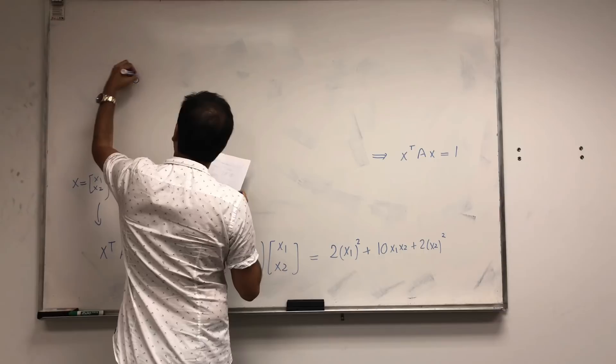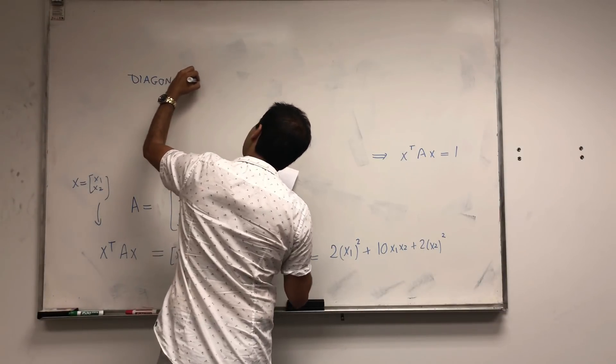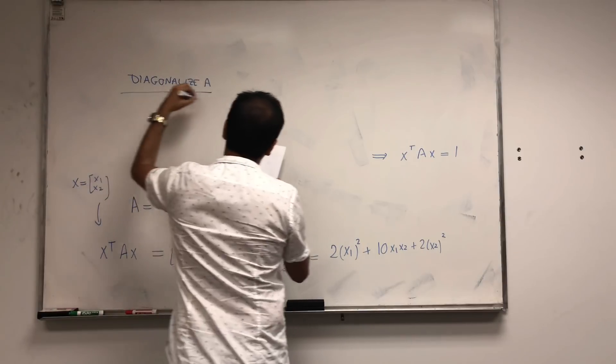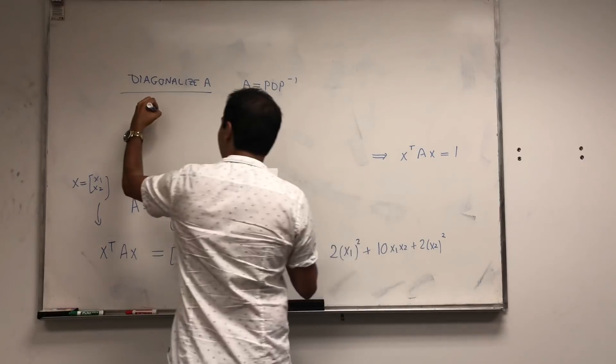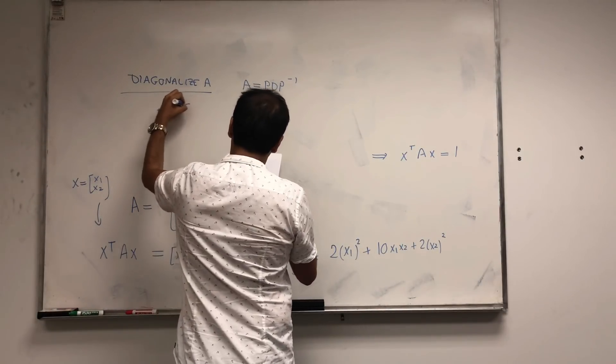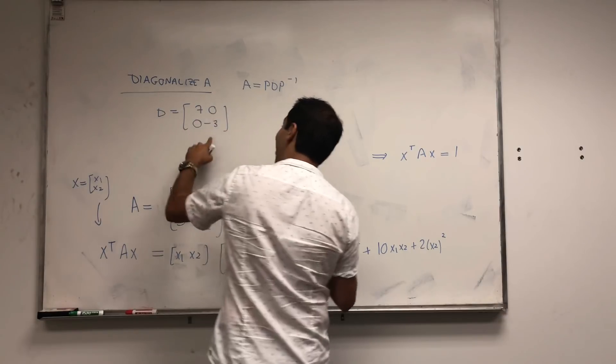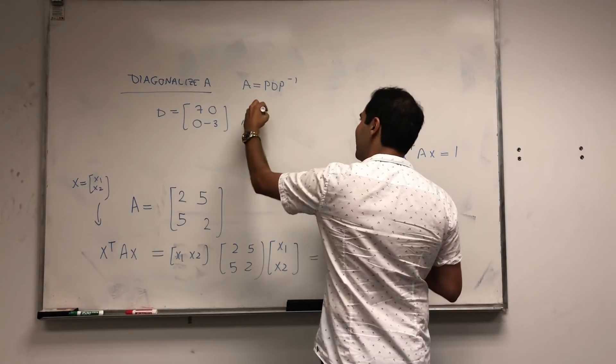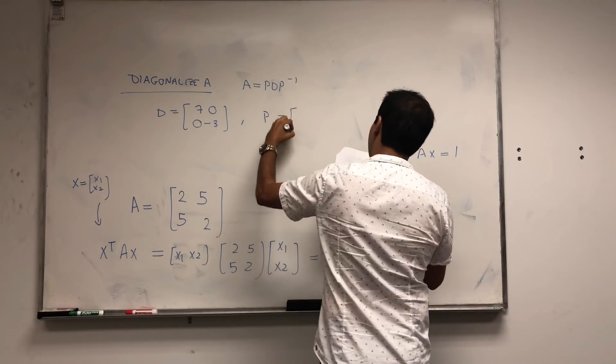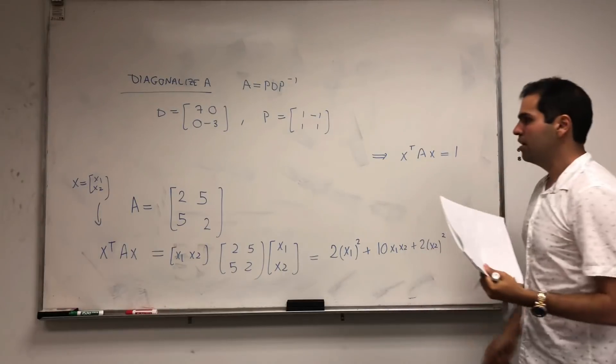So first of all, diagonalize A. A is PDP inverse. Turns out the eigenvalues are just 7 and minus 3, which already tells you what A is, by the way. We'll get to that later. And P, I got 1, 1 minus 1, 1.